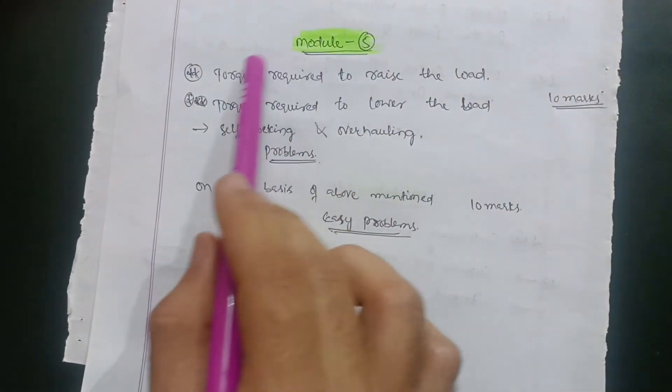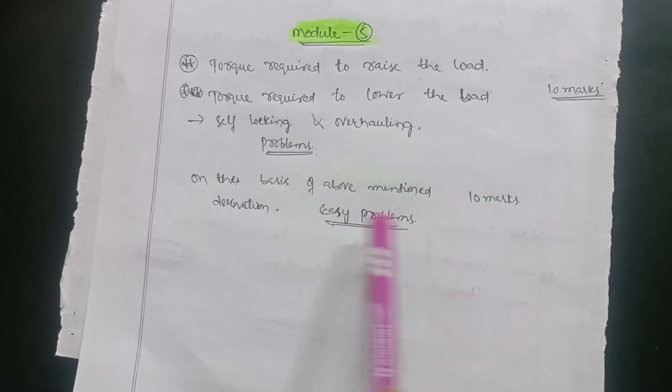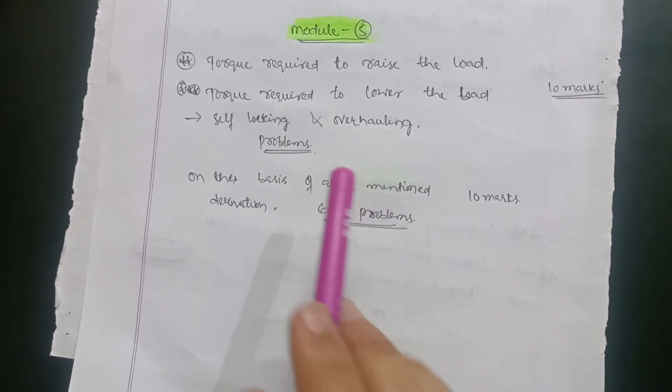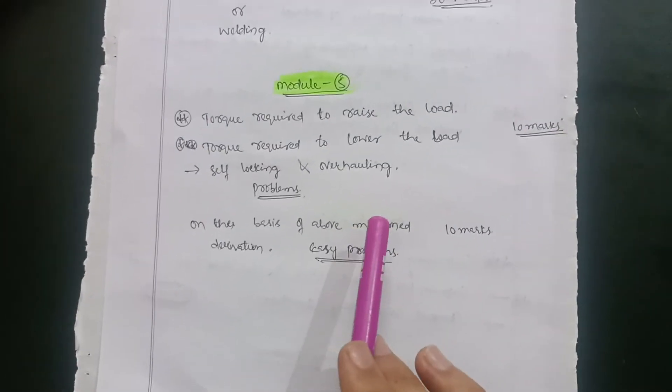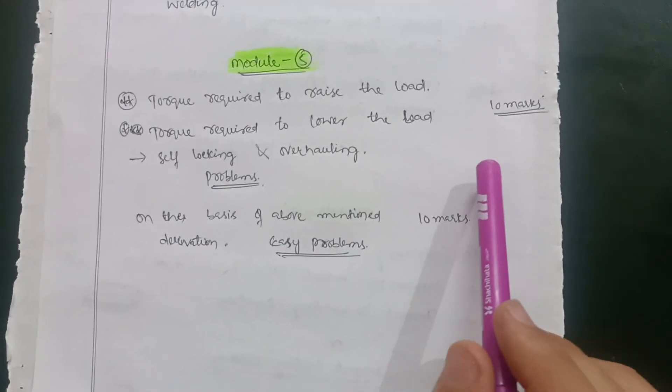Also problems on these two types of derivations - on that basis they will give you some problems. These are very easy problems, the data is also given in the data handbook. You have to use your data handbook then only you can make 20 marks possible in this module.